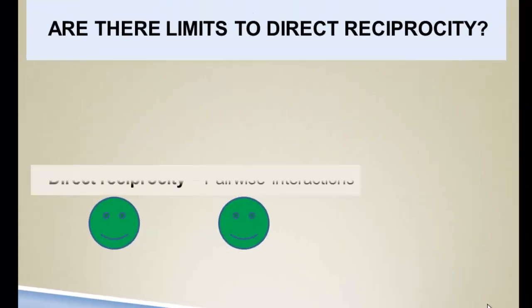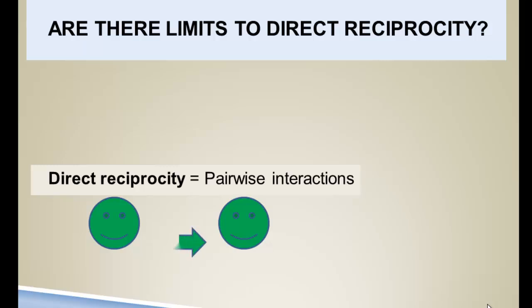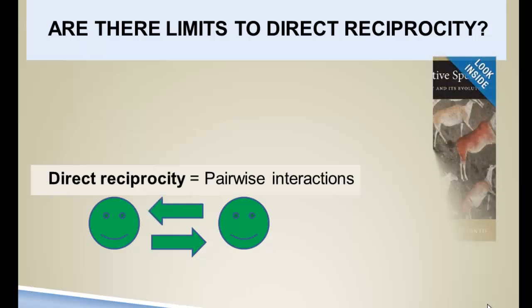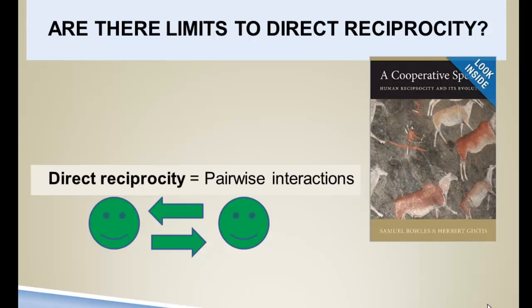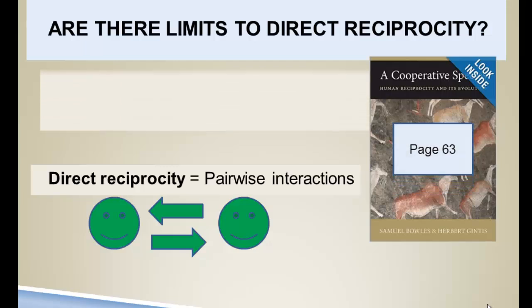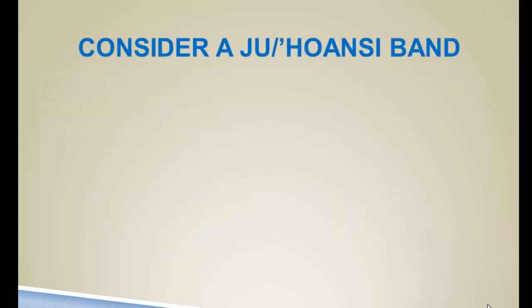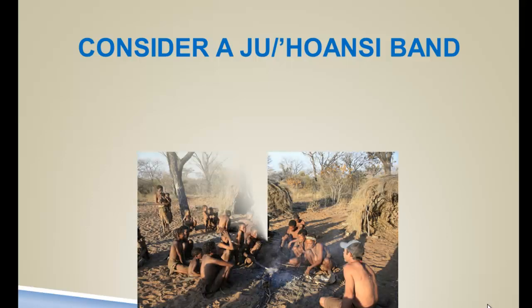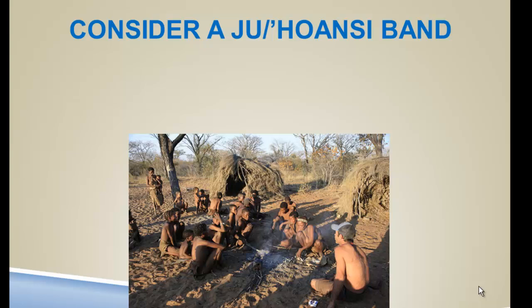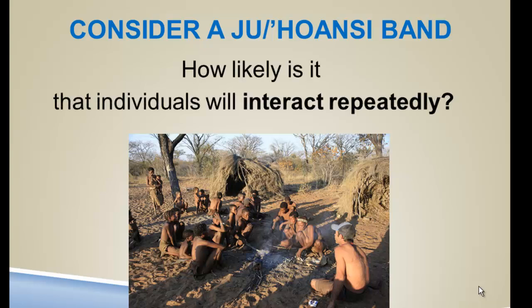Are there limits to direct reciprocity — these pairwise interactions between two agents? Sam Bowles and Herb Gintis argue in their book A Cooperative Species that the plausibility of direct reciprocity does not extend to large groups — there's a size limit. Consider a hunter-gatherer band like the Ju/'hoansi of southwestern Africa, living in groups of 10 to 25 with a total population of several hundred. It's very likely that any two individuals will see each other again, so cooperators will easily find one another.